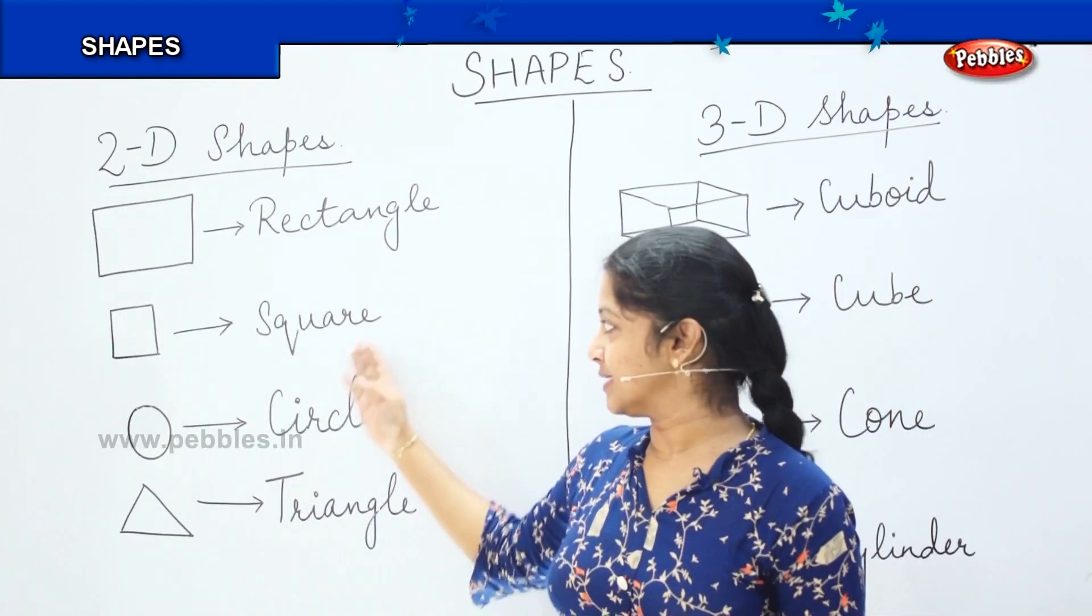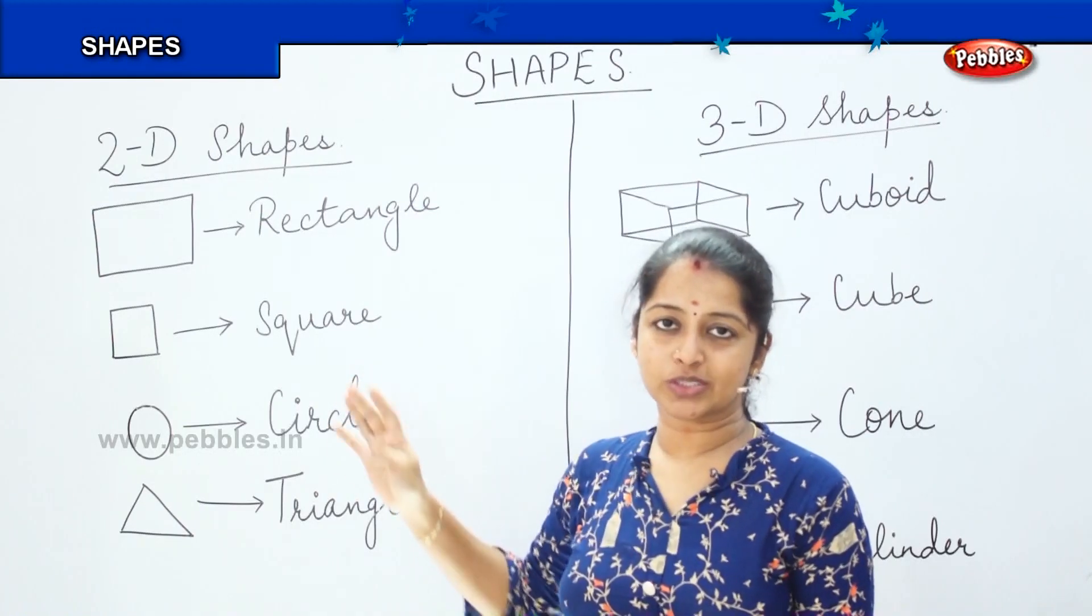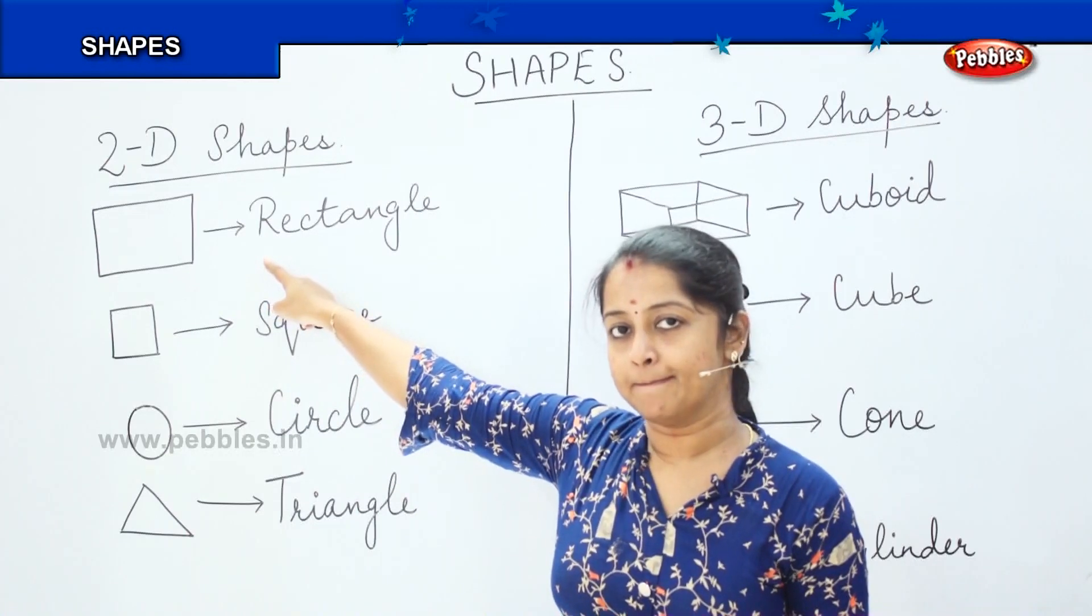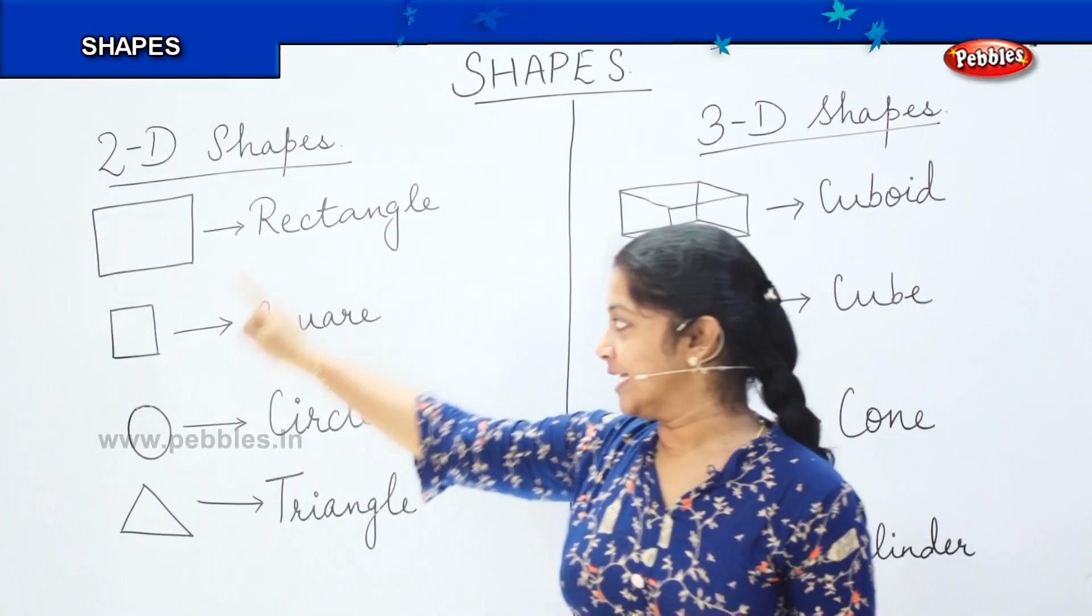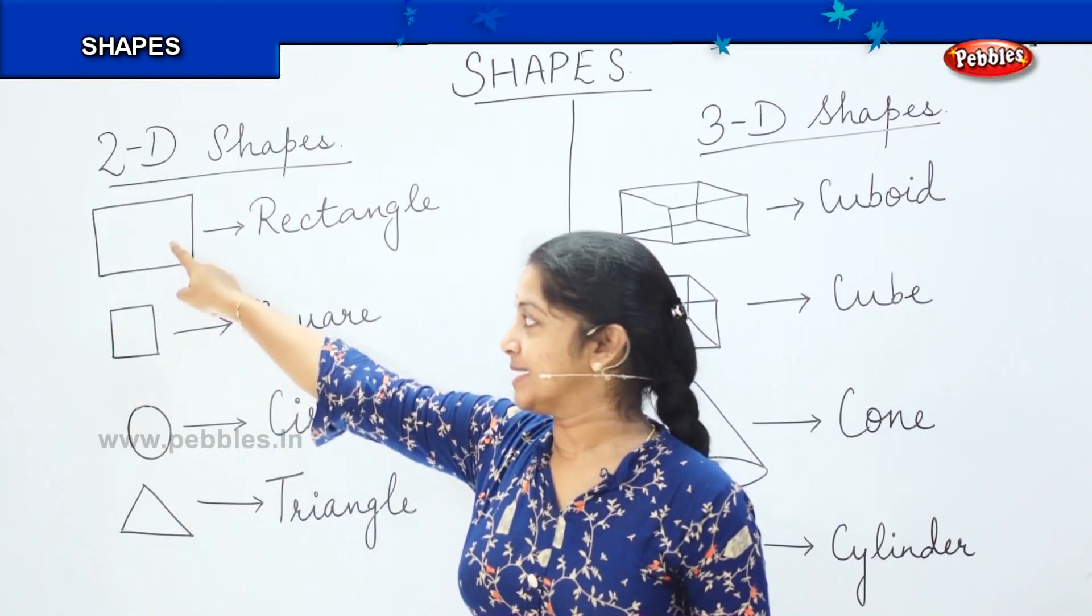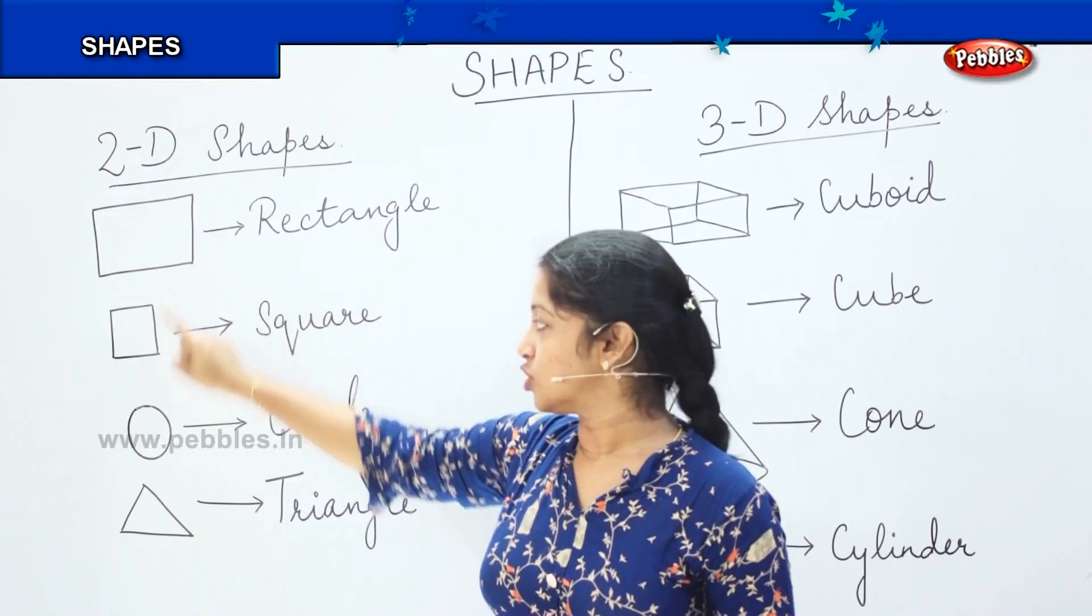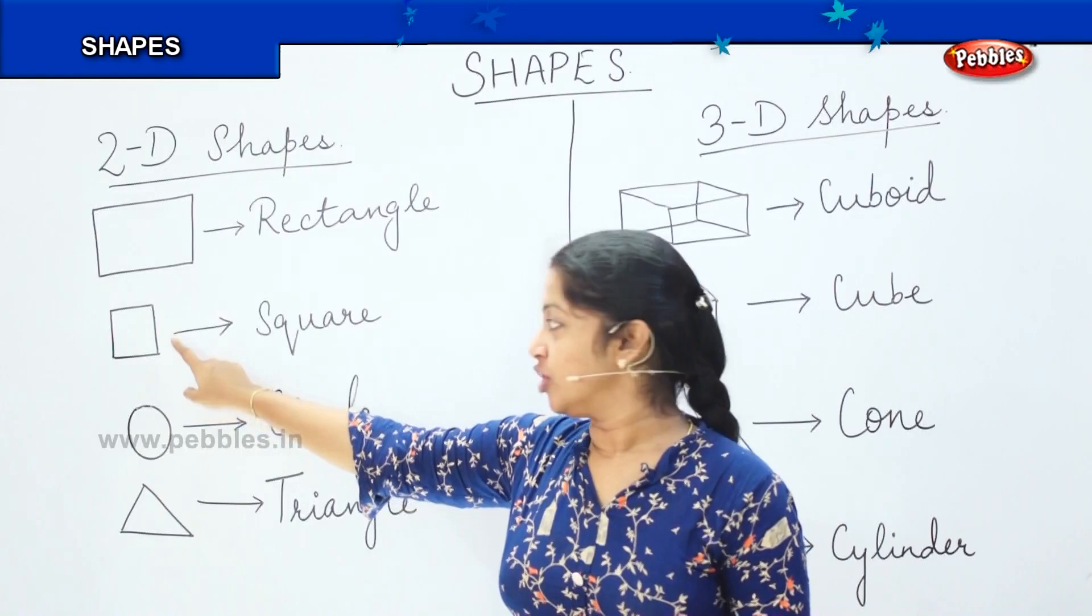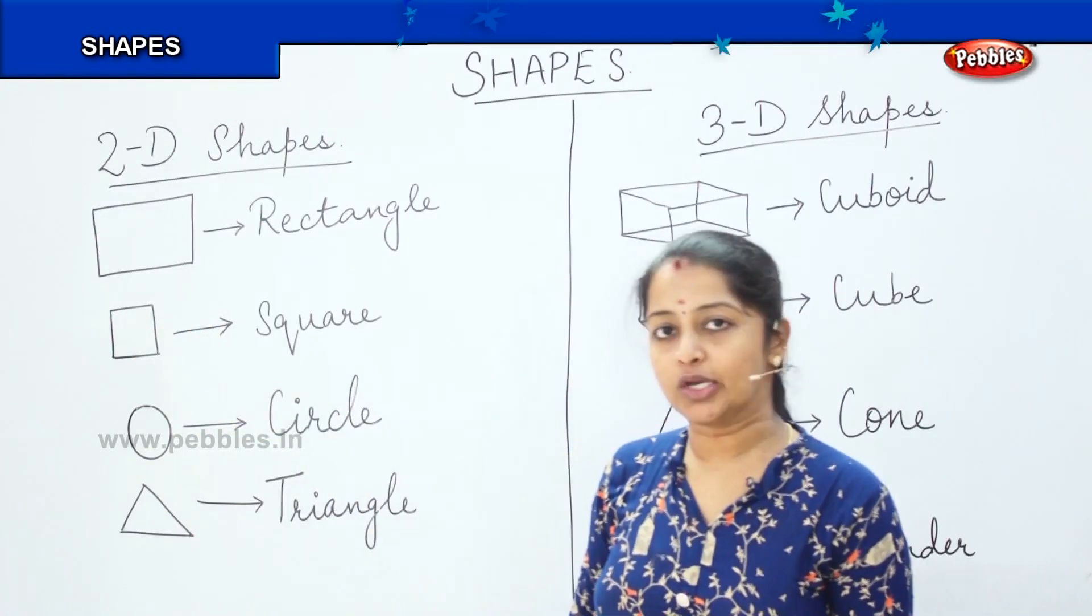Coming to the next shape, what is this? Here for this shape also we have got four sides. So is this and this shape the same? Very good. Both are not same. In this shape, we have all the four sides equal whereas here we have the opposite side equal, right? So this is called a square where you have got four sides and all the four sides are equal.